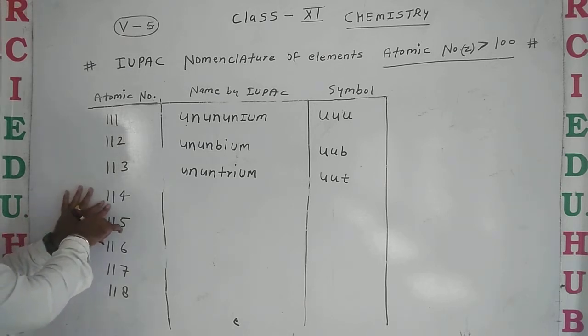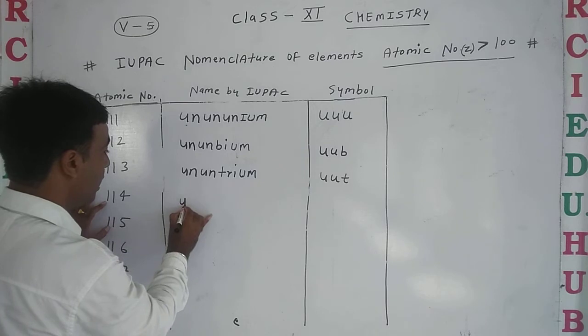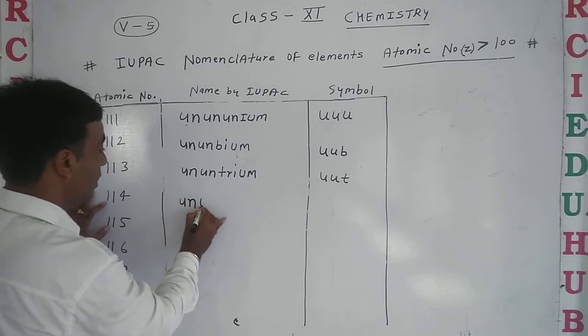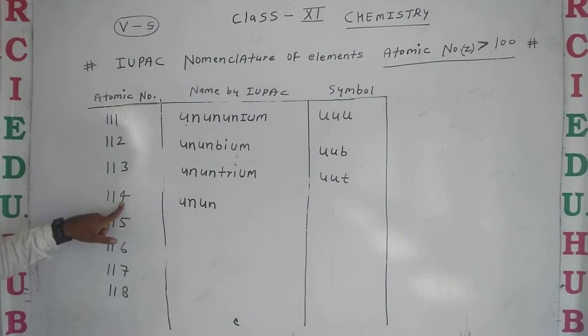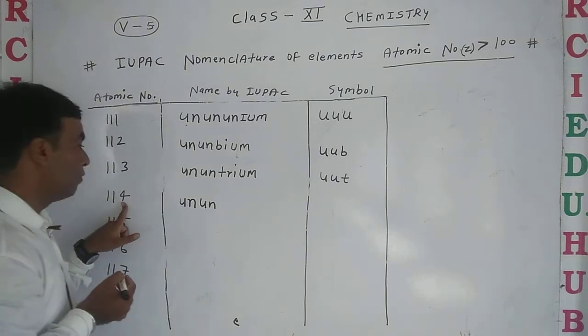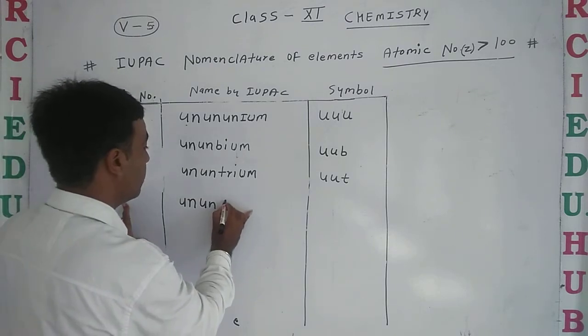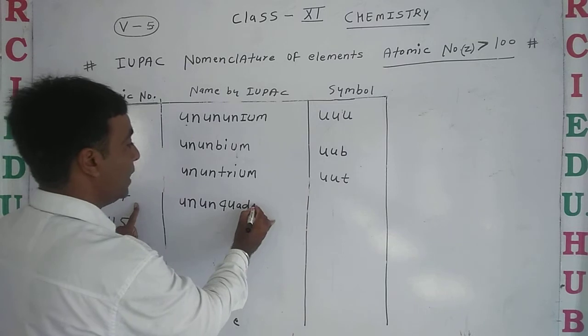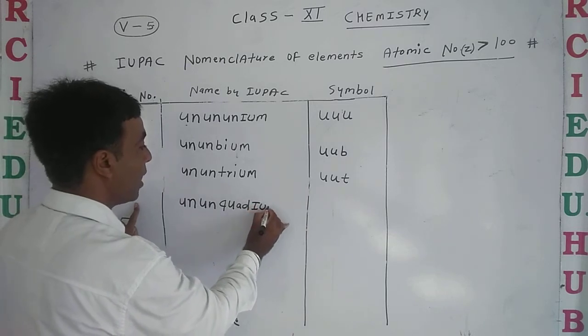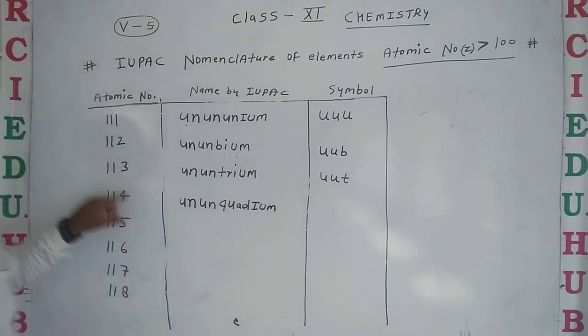Next, one one four. For 4, we use 'quad' according to previous digit rules. So 'un' 'un' 'quad' with suffix '-ium' - ununquadium. Symbol will be U U Q - Uuq.